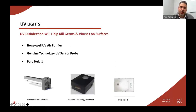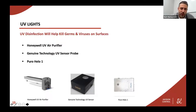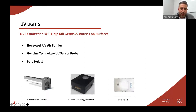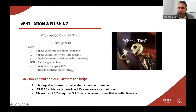As it relates to UV disinfection for surfaces, UV can certainly be deployed outside of a typical HVAC setting for on-demand and automated surface disinfection. Examples include Honeywell air purifiers for on-demand and Puro Halo air purifiers, which are deployed in unoccupied surface disinfection settings.